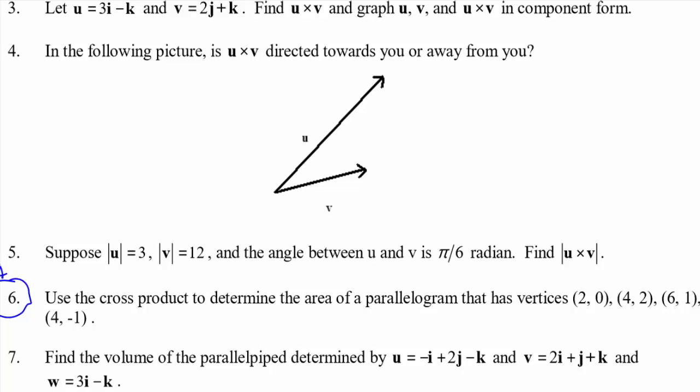So you have to think of it in terms of how do I get U to be my right arm if my torso is going to be parallel to U cross V. And my head is going to go in the direction of U cross V. How do I get U to be my right arm?